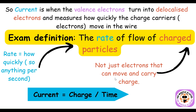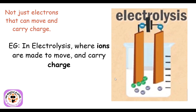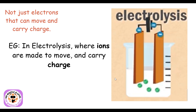The exam definition of current you need to memorize is: the rate of flow of charged particles. 'Rate' means how quickly, so current equals charge divided by time — that's the equation I = Q/t. We say 'charged particles' rather than 'electrons' because it's not just electrons that can move and carry charge. In electrolysis, ions move from an ionic solution to the oppositely charged electrode, so ions can also be charged particles that cause current.